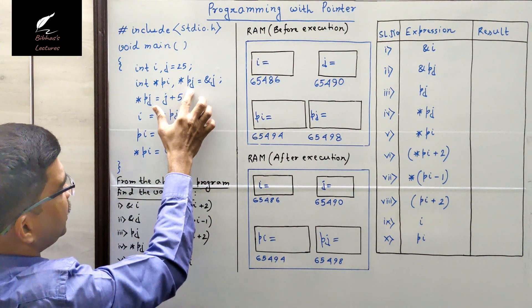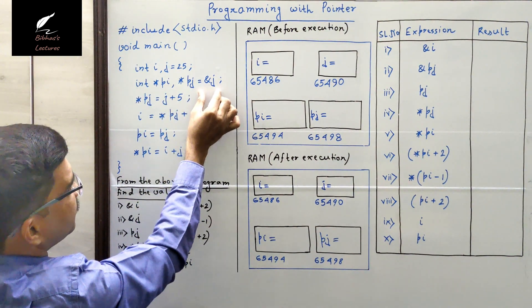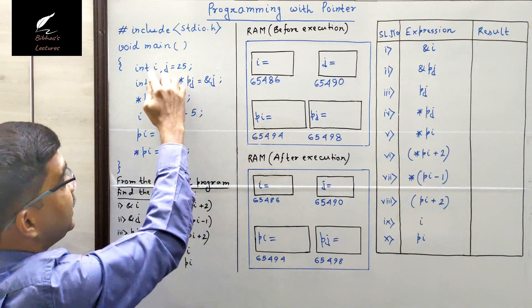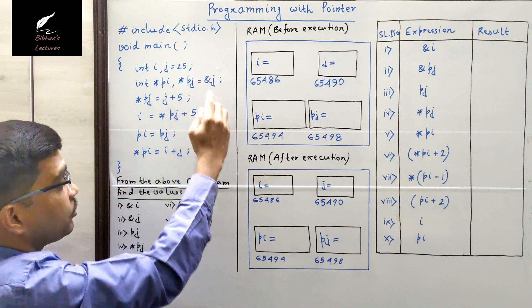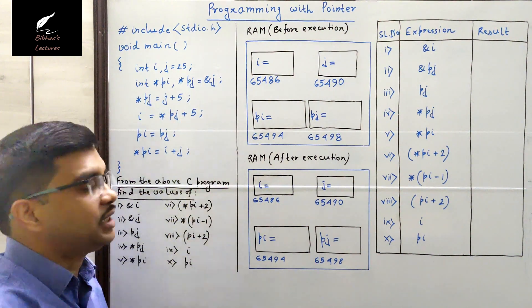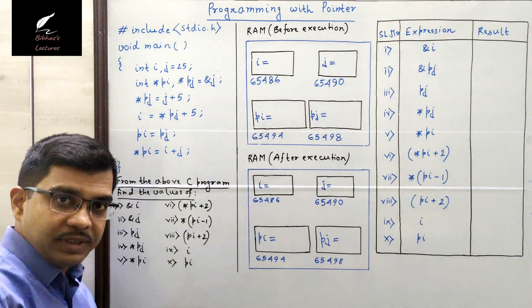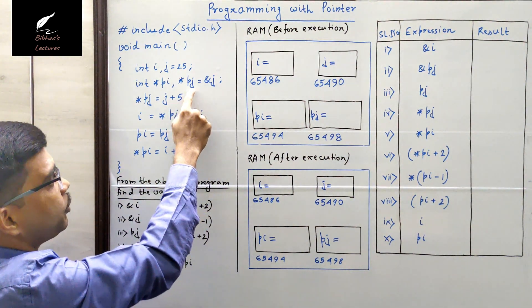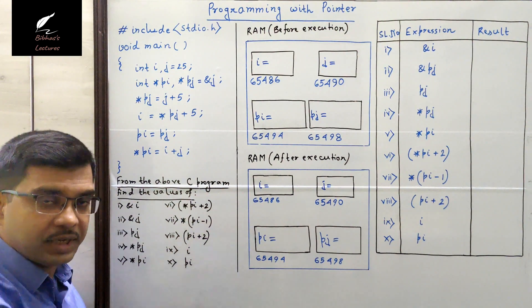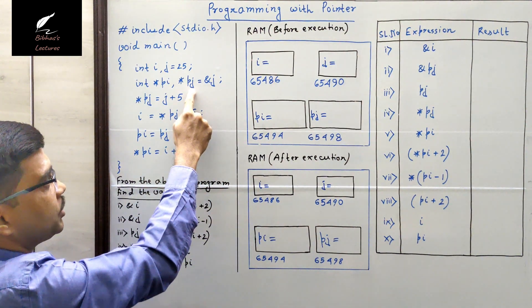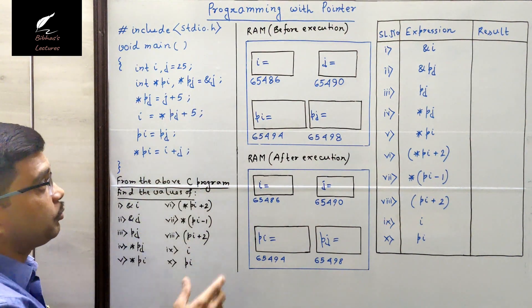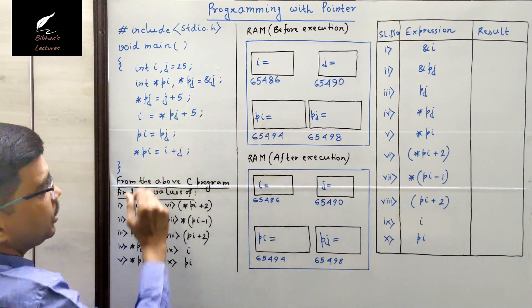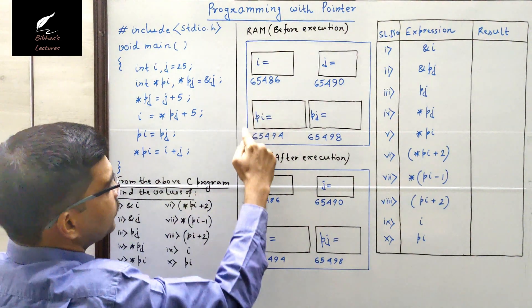In pj we have assigned the address of j. Now j is an integer variable, so address of j means it is the address of an integer variable. An integer pointer can store this address, and the name of that integer pointer is pj. So at the time of declaration of the pj pointer we are assigning the address of j to pj. Let's look at the pictorial representation of the RAM before execution.